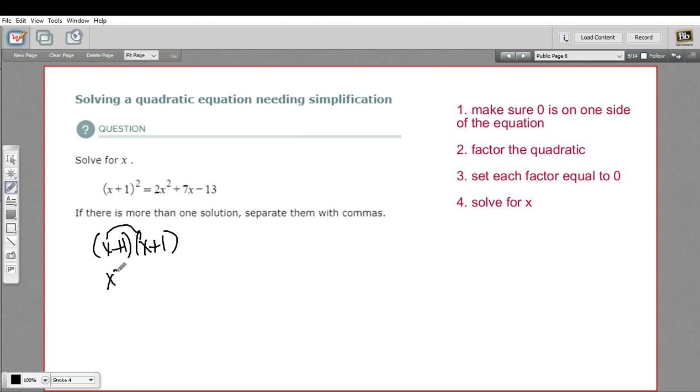x times x would be x squared. x times 1 would be x. 1 times x would be x. And 1 times 1 would be 1. So this is x squared plus 2x plus 1.